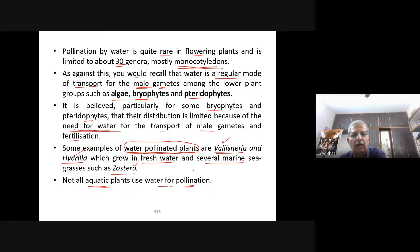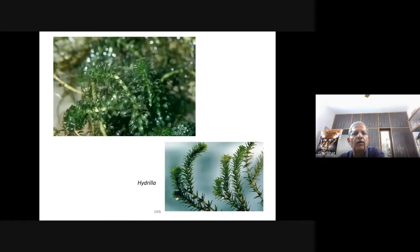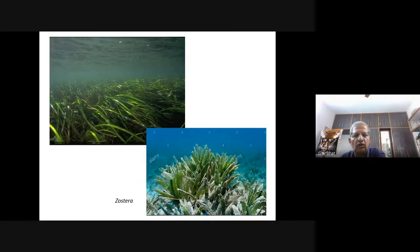Vallisneria is grown in aquariums and its flowers are pollinated by water. Hydrilla is generally within the water and depends on water for pollination. Zostera is a seagrass pollinated by water. In Vallisneria, the female flower reaches the surface of water by a long stalk, and male flowers or pollen grains are released onto the surface of water and carried by water currents.